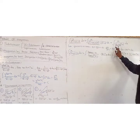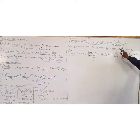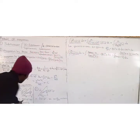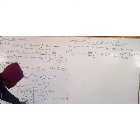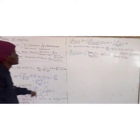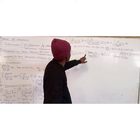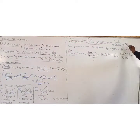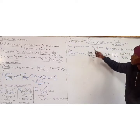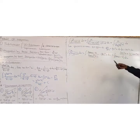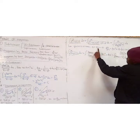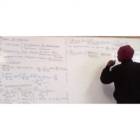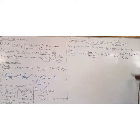We treat x plus 2 as our new variable. Let x plus 2 equal a tan(u), which equals 1 times tan(u) since a equals 1. So x equals tan(u) minus 2. Differentiating x with respect to u gives sec squared(u), so dx equals sec squared(u) du.